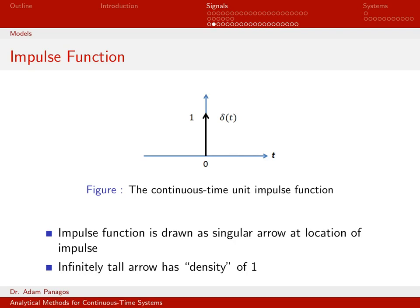You might be thinking, why in the world are we defining such a strange signal that's zero everywhere except at time zero, where it's infinitely tall and infinitely thin? It turns out the impulse function, delta of t, is very important when we start analyzing systems and talking about the impulse response of the system. When we talk about the impulse response of the system, we mean the system sitting there at rest with this signal as the input. So when we put this signal as the input to our system at rest, what comes out by definition is the impulse response. This is a very key fundamental signal that we'll be using in the rest of our class.